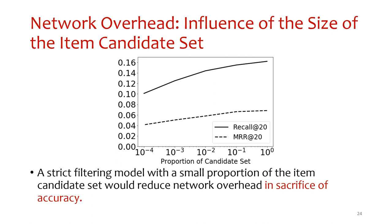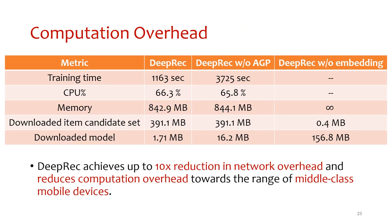To measure how the size of the item candidate set affects accuracy, we scale the proportion of the candidate set over all items. Accuracy drops rapidly as the candidate set becomes smaller, so we carefully choose a conservative proportion of 10% to balance network overhead and accuracy. In ablation experiments, DeepBReath without item embedding cannot be deployed on mobile devices because the runtime memory needed is dramatically beyond that of middle-class devices. AGP helps boost safe training time and reduces the size of the downloaded global module.